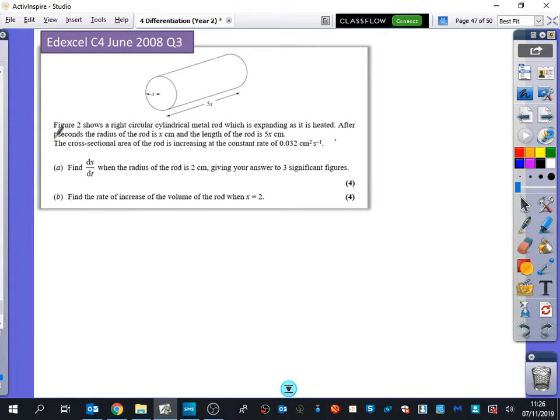So all this body of text here says is it's a cylinder. It's got these measurements. The most important thing that it says, though, is the cross-sectional area is increasing at a rate of 0.032. And look at the units. The units say centimetres squared s to the minus 1. As soon as you see something with the units in this question, you want to extract what that information is. So what is this information telling me? What is equal to 0.032?